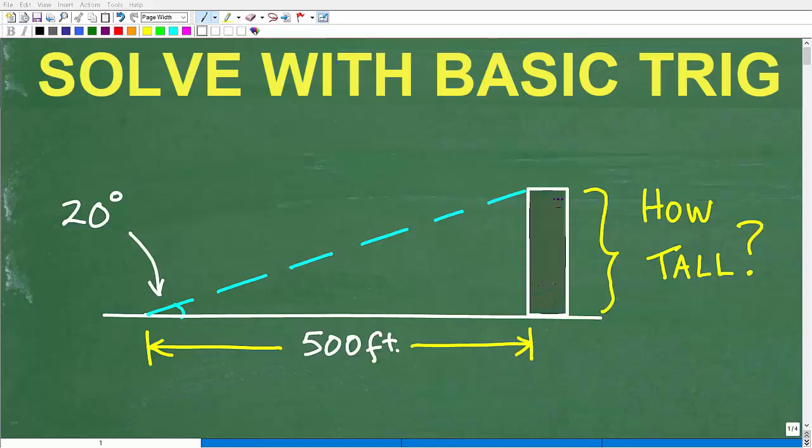Let's use some basic trigonometry to figure out how tall this building is. So the situation is we have this building and 500 feet away from the base of the building. Let's say you're on the ground. You have some sort of optical instrument and you measure the angle from here all the way up to the height of the building, and that's 20 degrees.